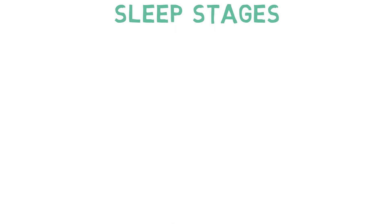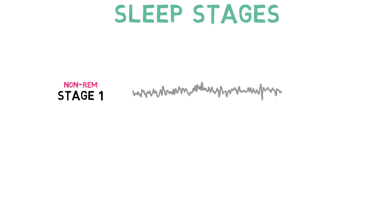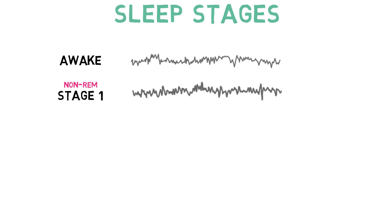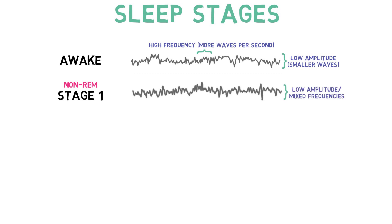Non-REM sleep can be subdivided into three stages. Stage 1 involves the transition from wakefulness to sleep. When someone is awake, an EEG will typically record high-frequency, low-amplitude brainwaves. When someone begins to fall asleep, they enter stage 1, during which an EEG records low-amplitude waves of mixed frequencies. People are typically easily awakened from stage 1 sleep, and it is a relatively short stage of sleep overall.